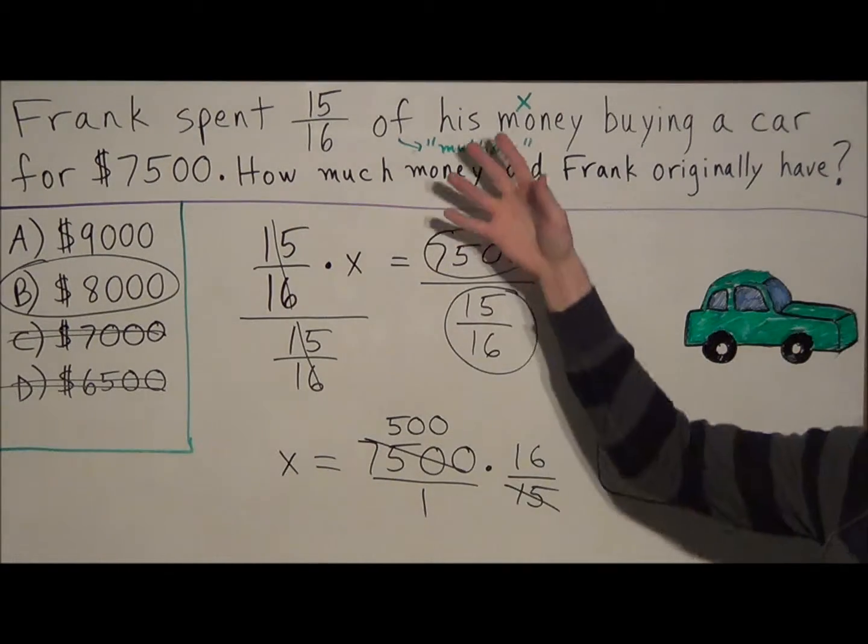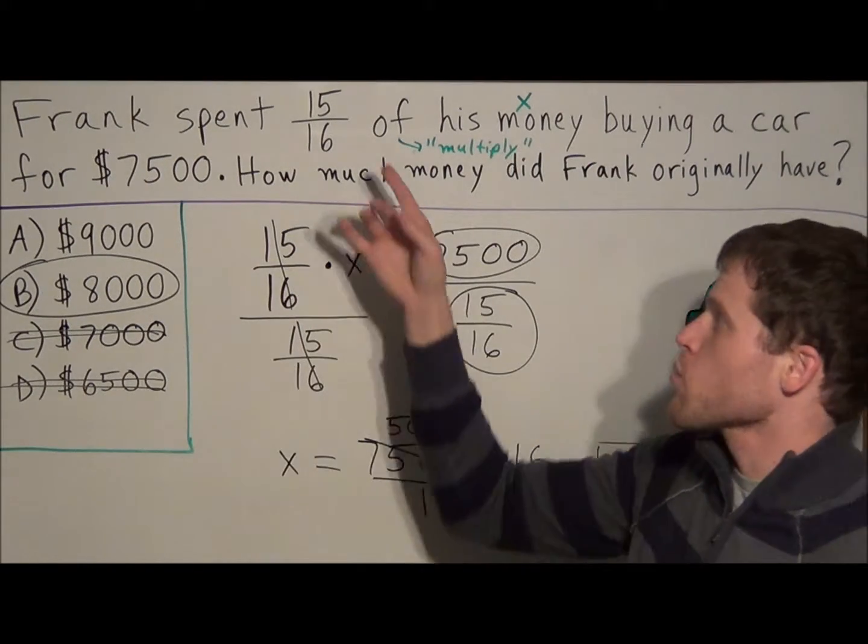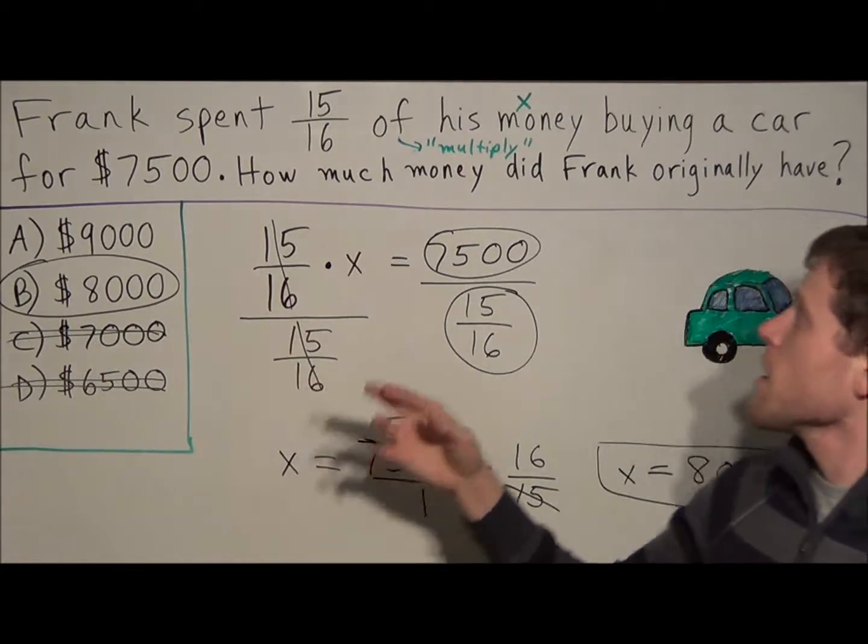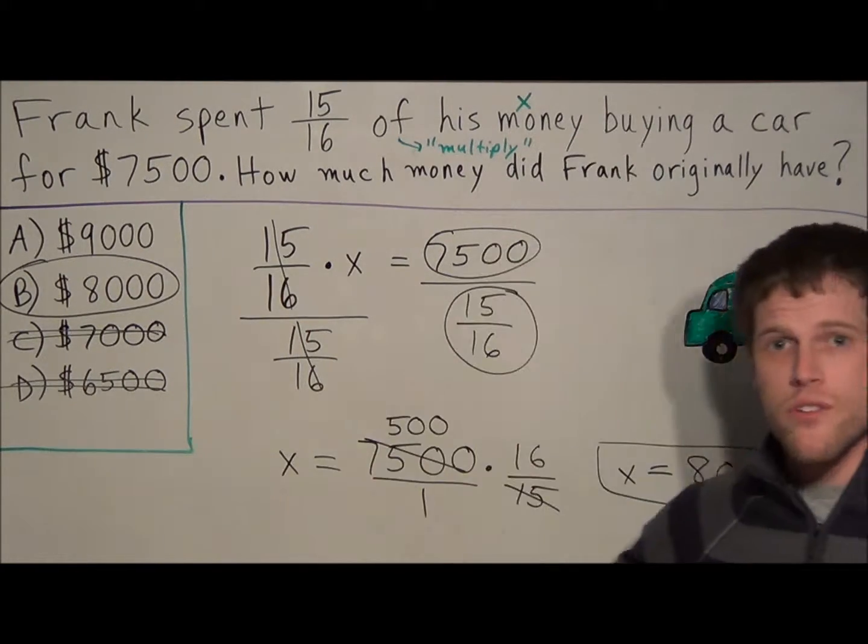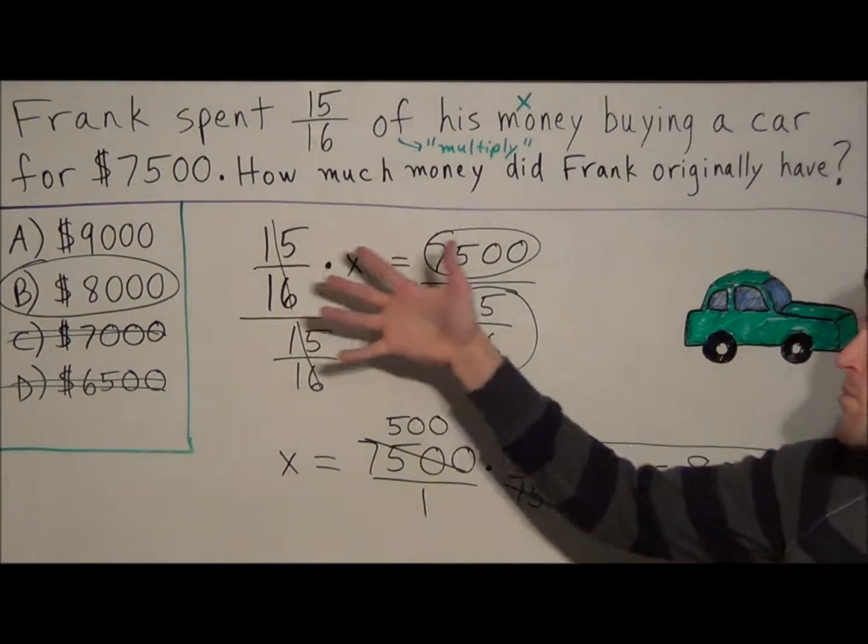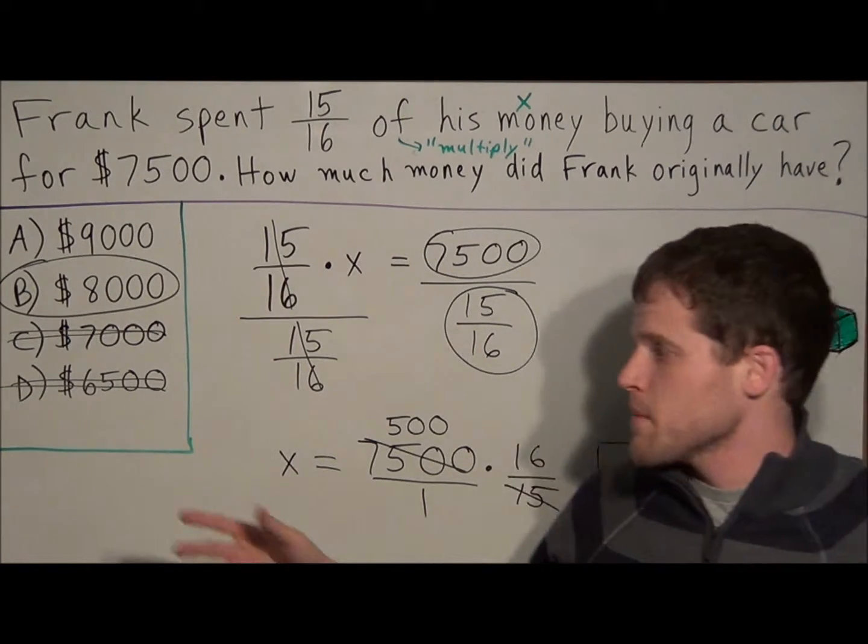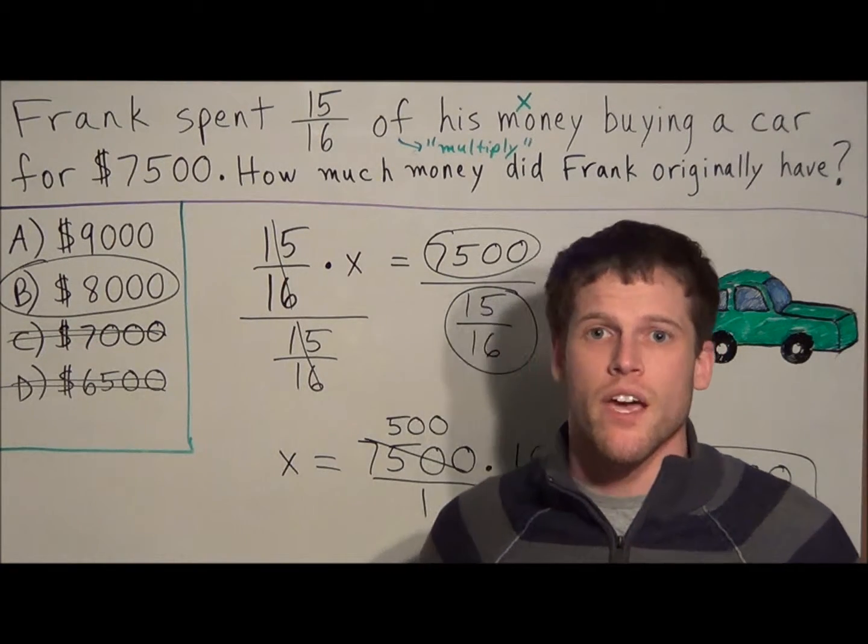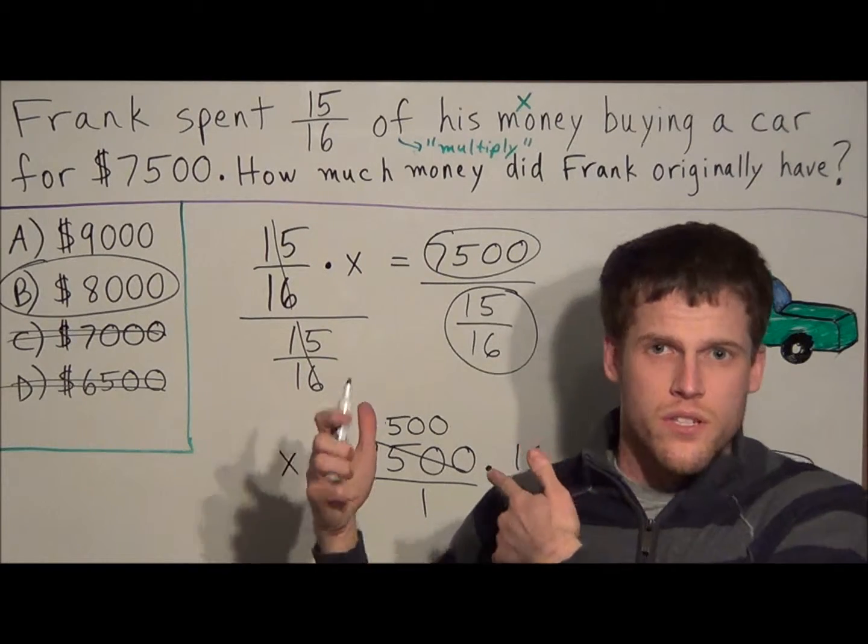So remember, just to recap, you want to label certain parts of the word problem. Remember the word of means to multiply, and the unknown section you could label as your X, and that will help you build your equation. But remember, use common sense to cross out the answers that really can't happen, and you'll narrow it down if you do forget all this.